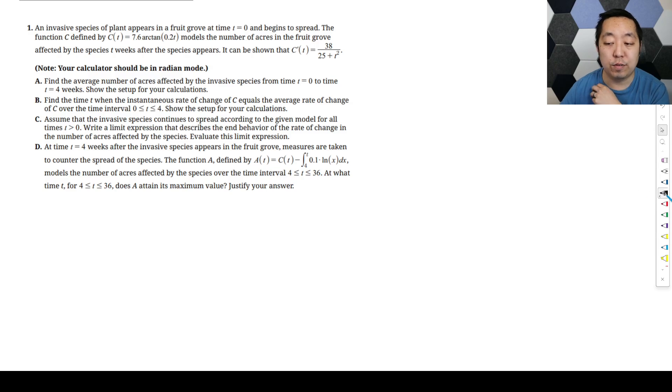Alright, so let's take a look at this first FRQ from the 2025 exam. We have this invasive species of plant that appears on a fruit grove and begins to spread. C of T is defined by this function here, which is the number of acres in the fruit grove affected by the species T weeks after the species appears. It can be shown that C prime is here, so they did the derivative for you.